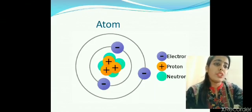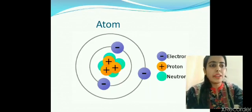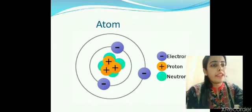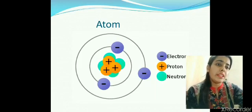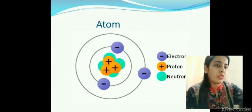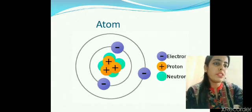Atom structure could be related to our solar system. Like in our solar system, sun is at the center and planets are revolving around the sun in their fixed path or orbit. Similarly, in an atom, the central part is called the nucleus which contains neutrons and protons, and the planets could be related to electrons.